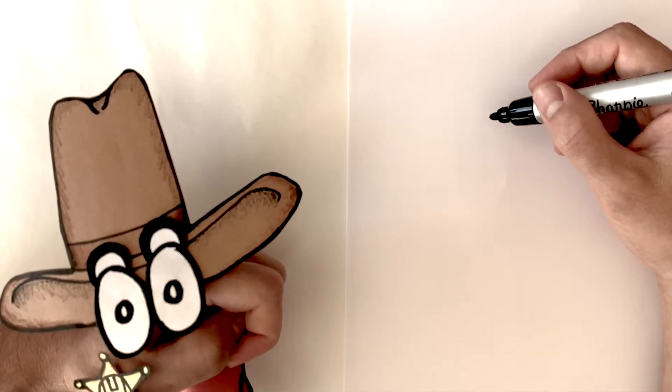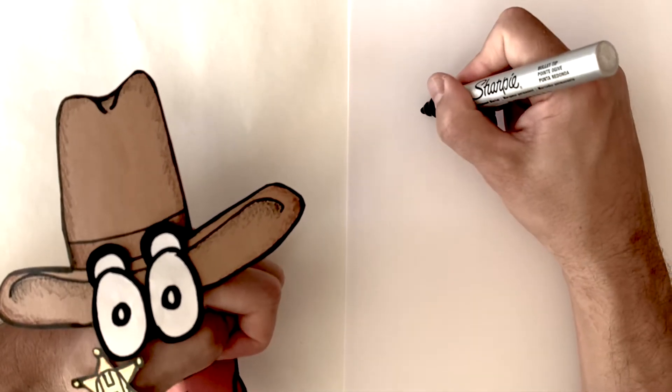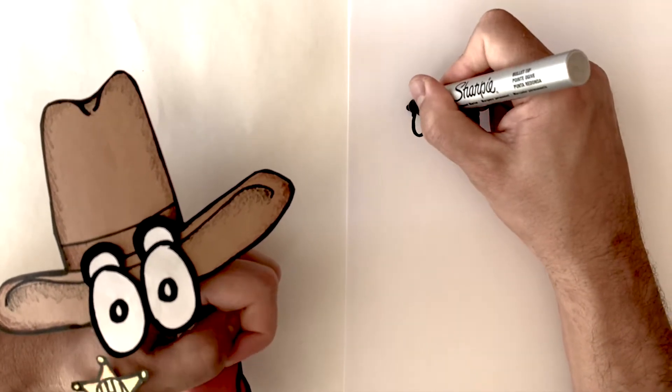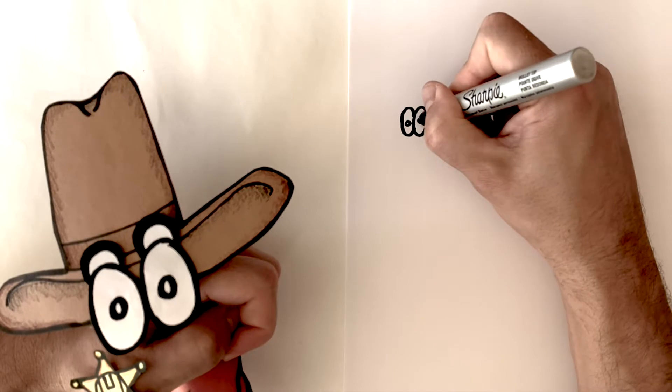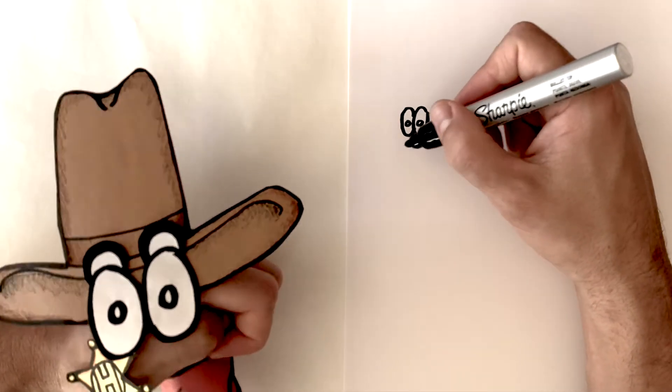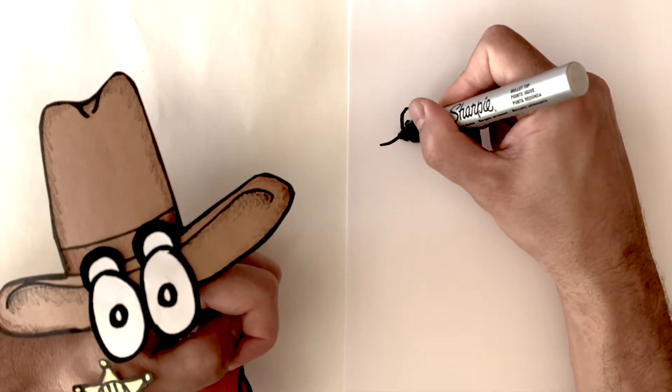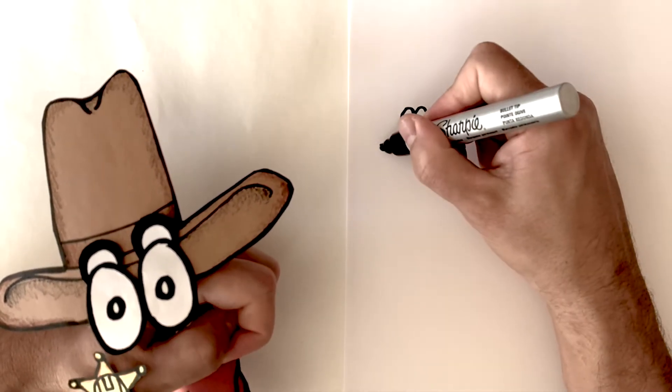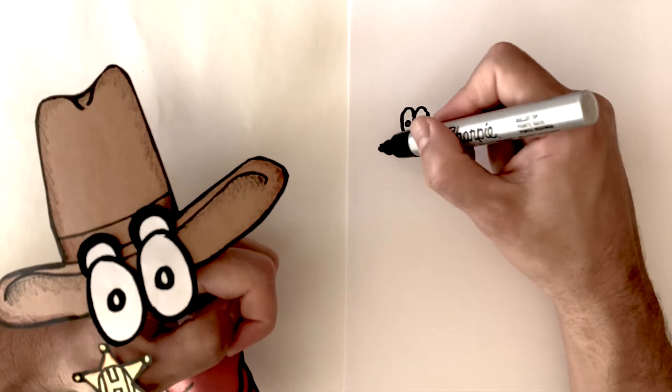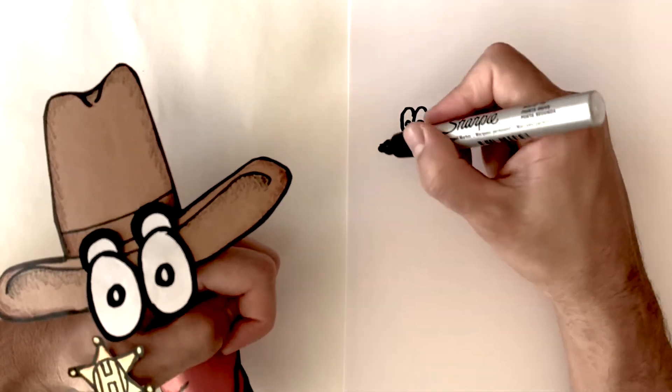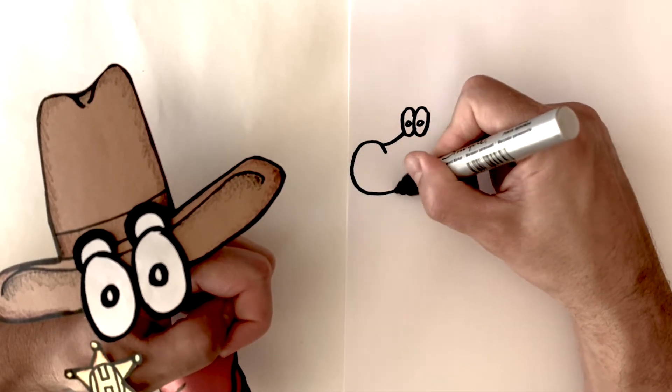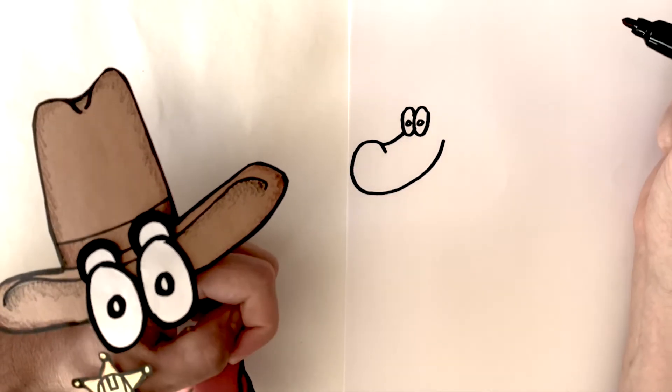First just draw those big dinosaur eyes. Good job! Draw a nice long curve for the snout and then bring a circle over and around and up to start drawing that nose and the top of the mouth. Like this.